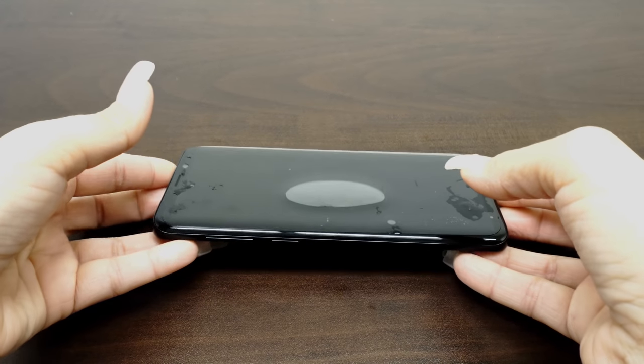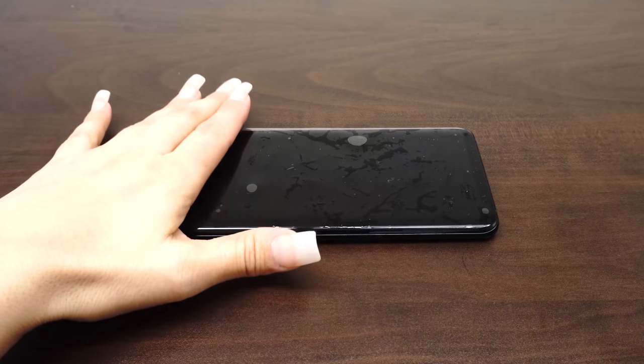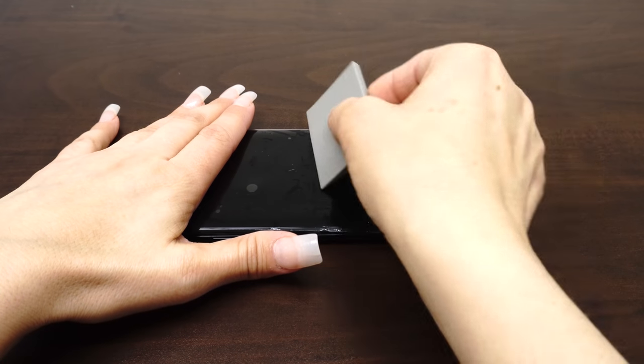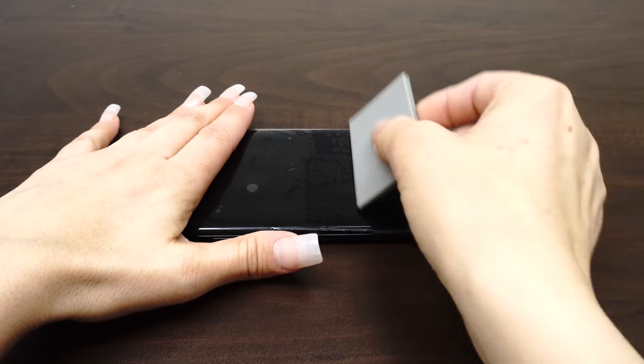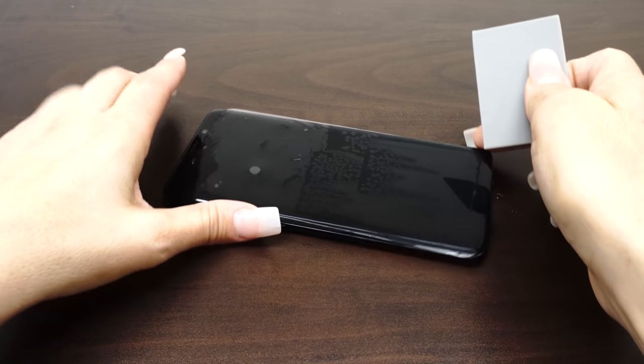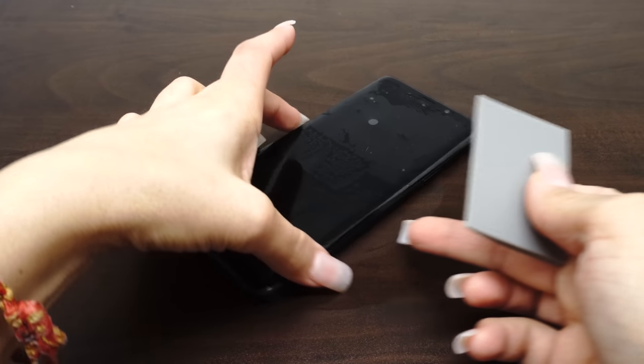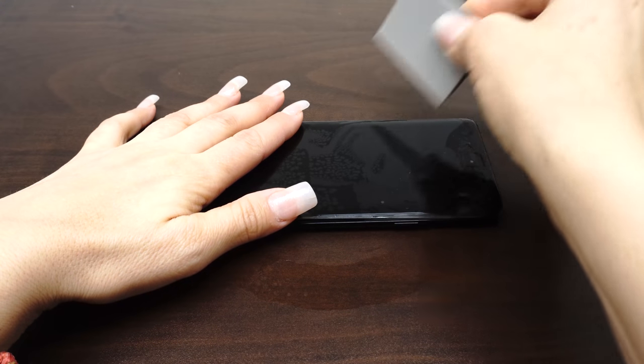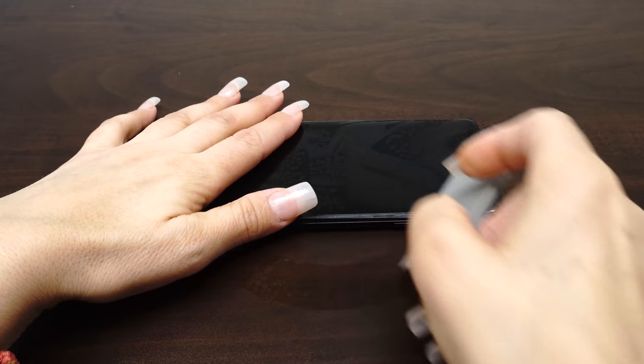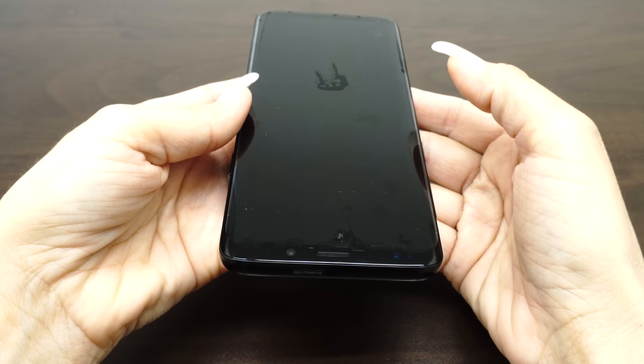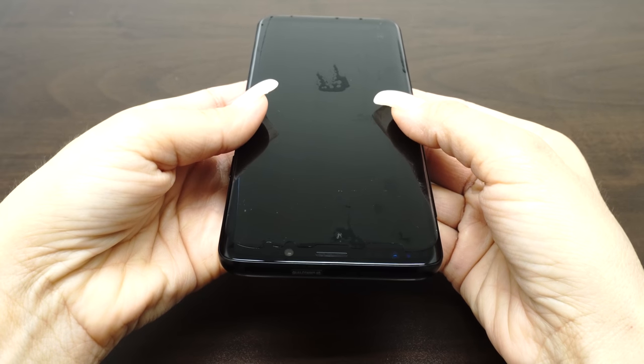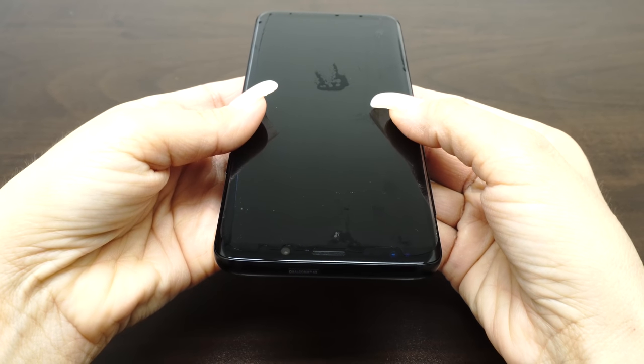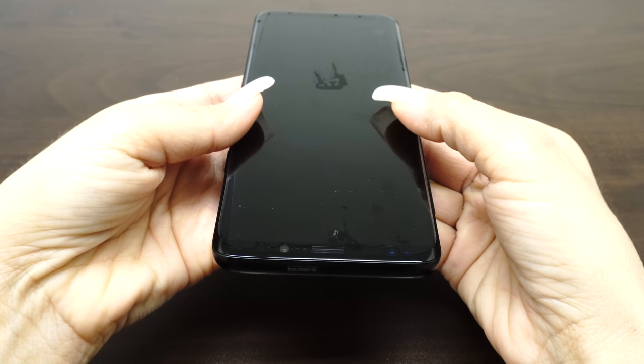Once you are satisfied with the position of the screen protector, take one hand and firmly hold down the device. With the other hand, squeegee out the bubbles and the solution. Move the squeegee from the center of the device to the edges. Take careful precaution not to push any of the liquid into the holes of the device. The screen may move during this process, so take time to reposition the fit. As the liquid is removed, it will become more difficult to maneuver the screen protector.